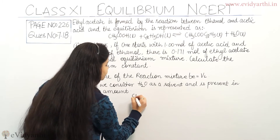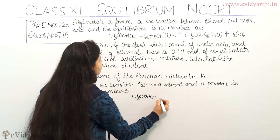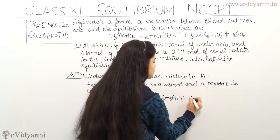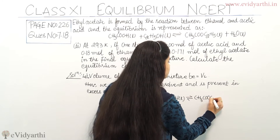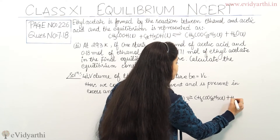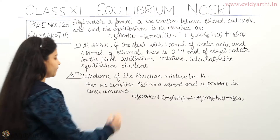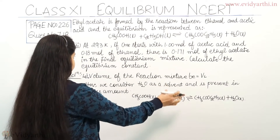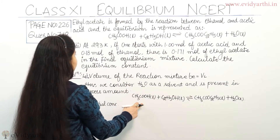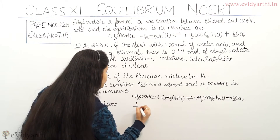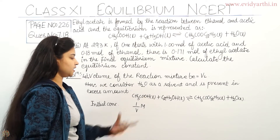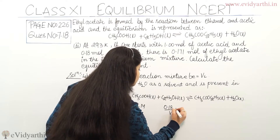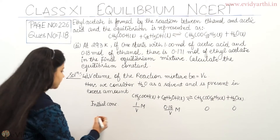The reaction is: CH3COOH (l) + C2H5OH (l) ⇌ CH3COOC2H5 (l) + H2O (l). Initial concentrations: CH3COOH is 1/V molar, C2H5OH is 0.18/V molar, and the products are 0 initially.